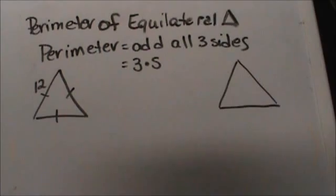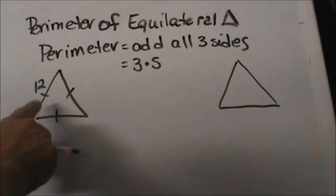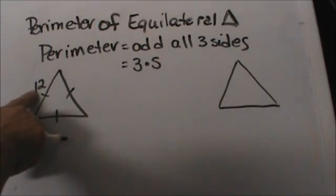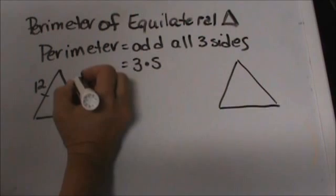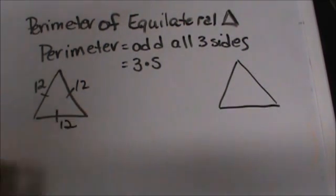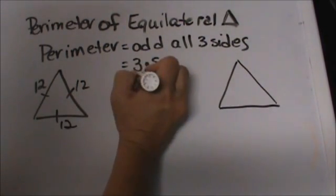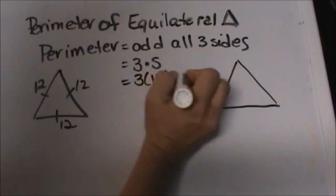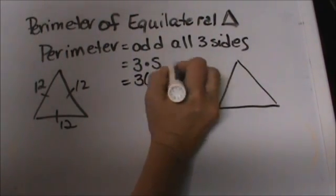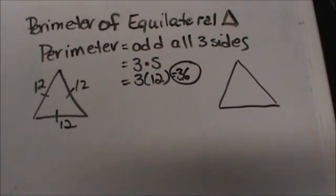So here we have an equilateral triangle and the side is 12, so we know all three sides are 12. So let's label that. So we can just take three times 12 to get 36. So my perimeter would be 36 units.